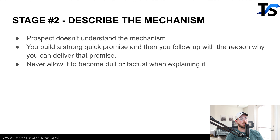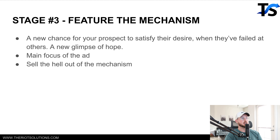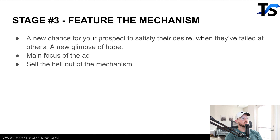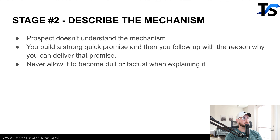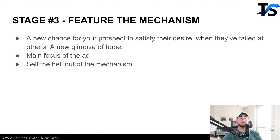The difference between 'describe the mechanism' and 'feature the mechanism' is that describe the mechanism is a lower stage of market sophistication — it's just part of a fuller ad. Whereas feature the mechanism is a new chance for your prospect to satisfy their desire when they've failed with others — a new glimpse of hope. For example, if they've done macro counting, CrossFit, different types of exercises, then all of a sudden a new mechanism comes out: keto. And the whole ad is built around keto as that new mechanism.